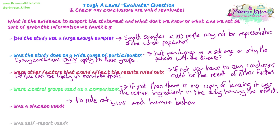If people know they're all getting a drug that should be trying to cure something, they might believe they will feel better and start reporting that they feel better — because they know they're getting a drug that should work. That can skew your results. Whereas if you have a placebo — some people getting a drug that doesn't work — you can rule out anything similar to that placebo group as clearly not valid results.